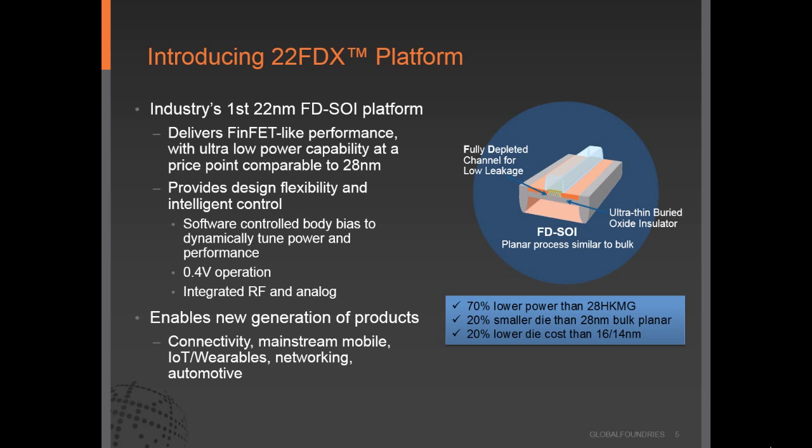The benefits of 22FDX do not stop there. 22FDX provides truly differentiated capabilities for design flexibility and intelligent control that are not available anywhere else. This includes software-controlled ability to do body biasing of the transistor to dynamically tune power and performance. It has improved electrostatic control on the transistor, low variability, and body biasing capability that can achieve 0.4 volt operation. It's a completely RF-enabled technology with knobs to reduce RF power by up to 50 percent. This technology has the features required to enable the next generation of products in connectivity, mobile, IoT wearables, networking, and automotive applications.